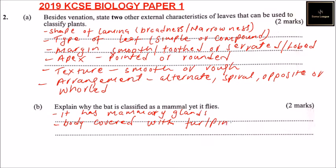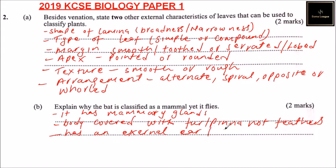Body covered with fur — or we call it pinna. Not feathers. It doesn't have feathers like a bird. The other characteristic is it has an external ear, or we can say pinna, just like human beings have a pinna — the mammals have an external ear outside the head.